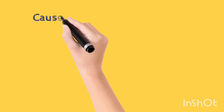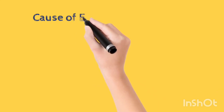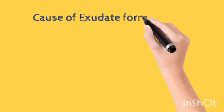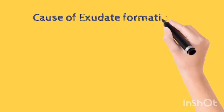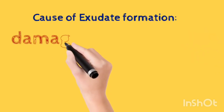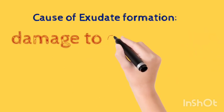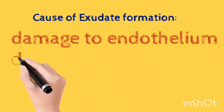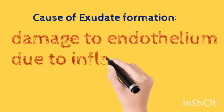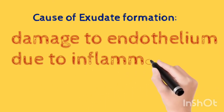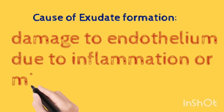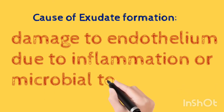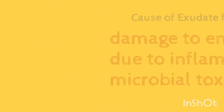The basic causes of exudate formation are those which cause endothelial injury. Endothelial damage is caused either by microbial toxins, or by the damage that occurs during inflammation, which can also lead to endothelial damage, leading to exudate formation.